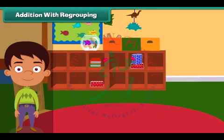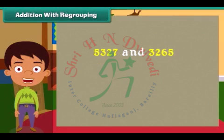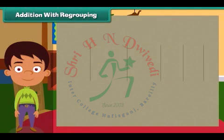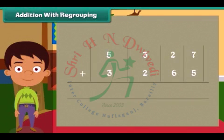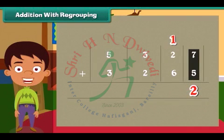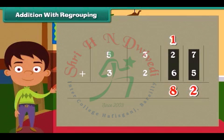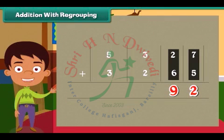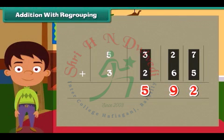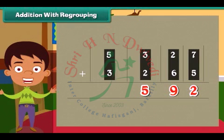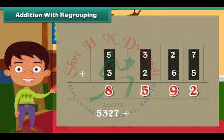Addition with regrouping. Let's try the addition of 5327 and 3265. We start by adding values at the ones place: 7 plus 5 is equal to 12. Write 2 below in the ones column and write 1 above in the tens column. Next we move to add the tens: 2 plus 6 plus 1 is equal to 9. Write 9 below in the tens column. Now we add hundreds: 3 plus 2 is 5. Write 5 below in the hundreds column. Similarly, add thousands — we get 8. Therefore, 5327 plus 3265 is equal to 8592.